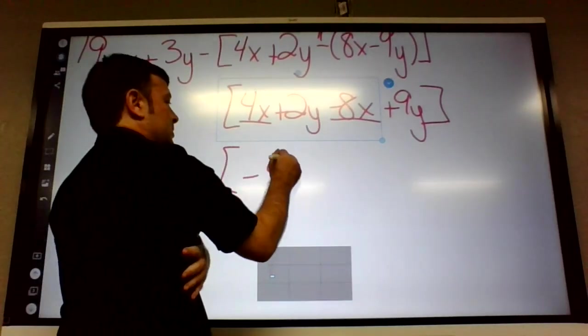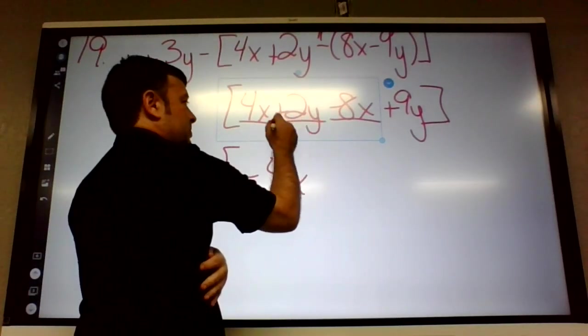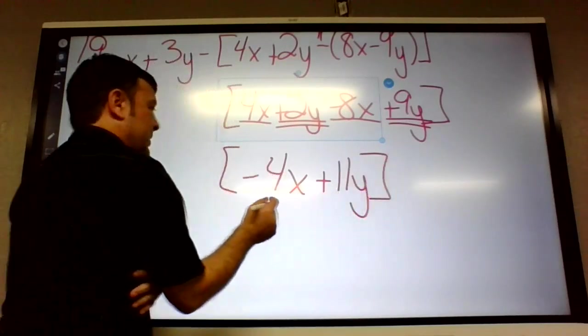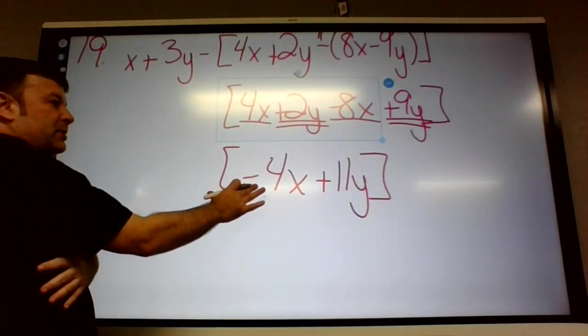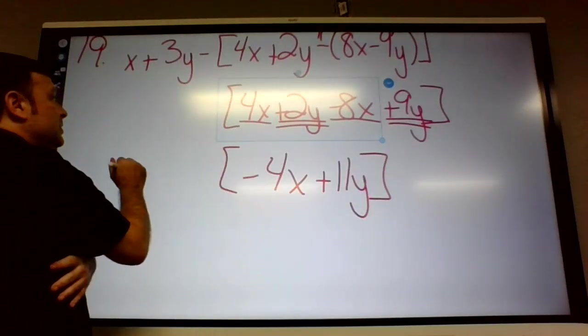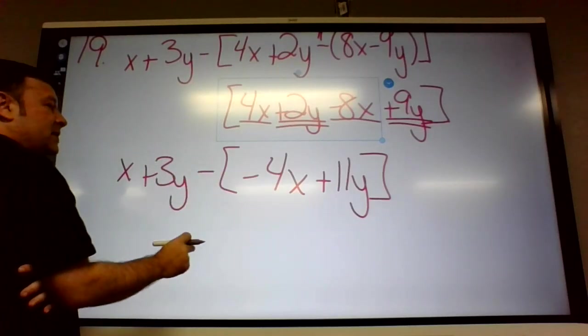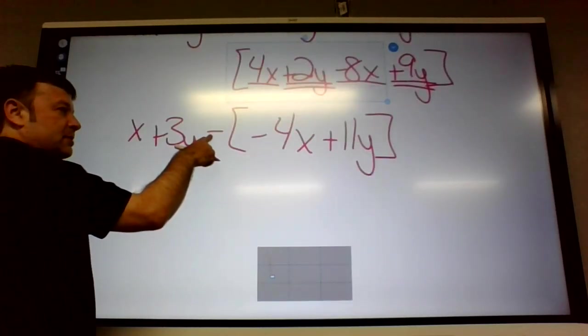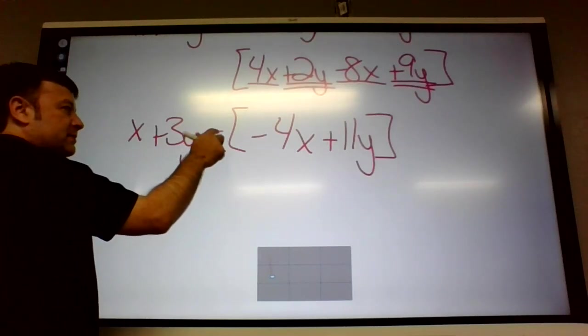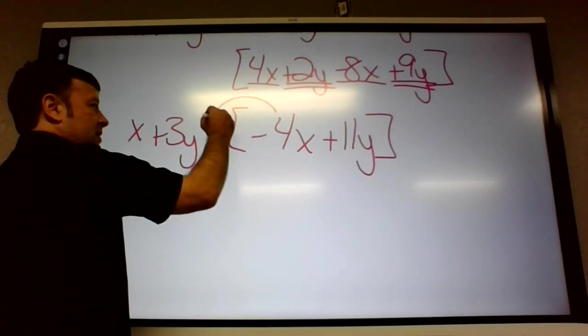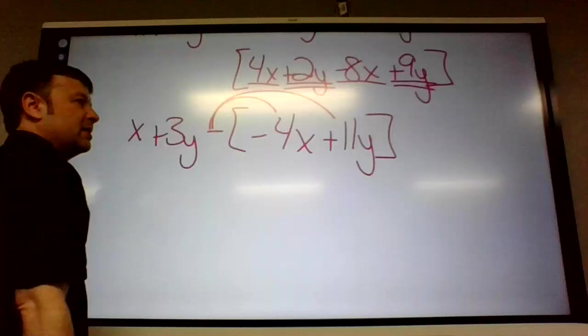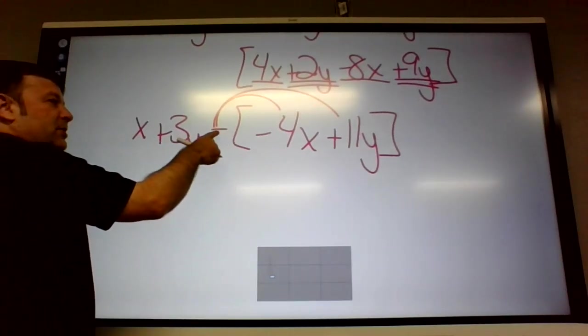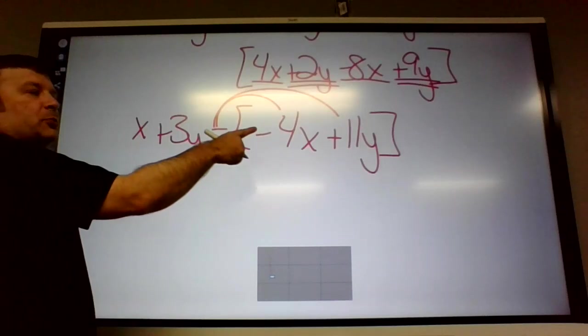So four X minus eight X. Negative four. And then plus two plus nine plus 11. Okay. Now that's all we can do inside, right? Okay. Now if I copy down what was outside here. Okay. There's a minus right here too. So what are we going to do with that guy? Well that's rude. All right. So kind of the same thing. So what will this become?